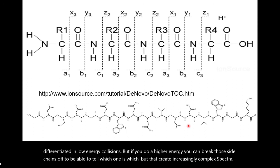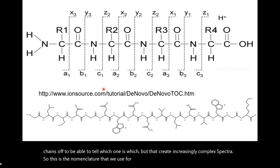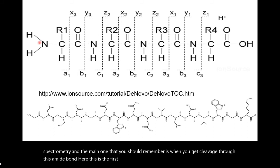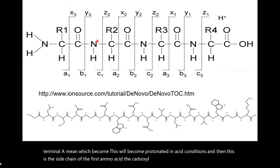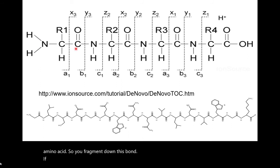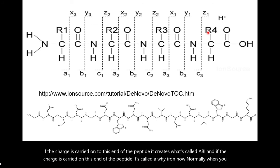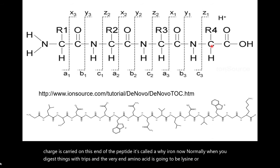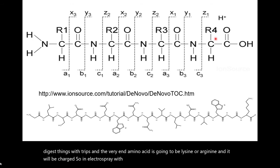Higher energy collisions can break off side chains to tell leucine from isoleucine, but create increasingly complex spectra. The nomenclature for describing peptide sequence from mass spectrometry: when you get cleavage through the amide bond, if the charge is carried on the N-terminal end it creates a b-ion; if carried on the C-terminal end it's a y-ion. When digesting with trypsin, the terminal amino acid is lysine or arginine and will be charged, so in electrospray with tryptic peptides you tend to generate a y-series rather than a b-series.